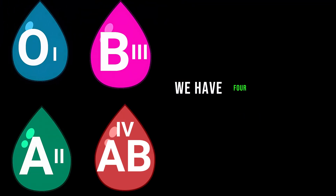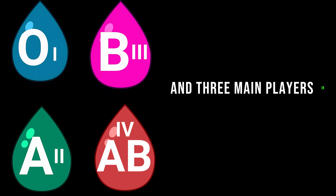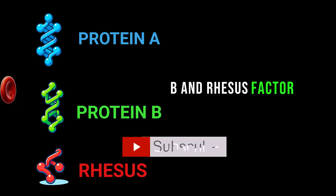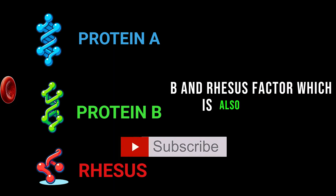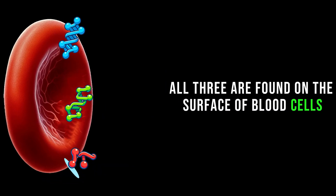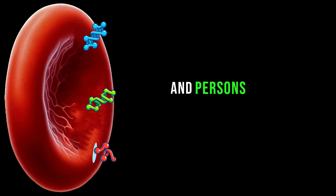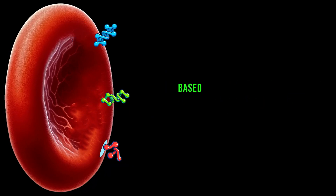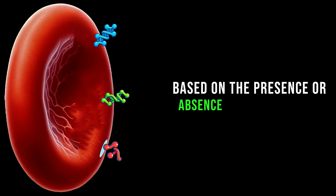We have 4 main blood types and 3 main players in defining blood types: protein A, protein B, and the Rhesus factor, which is also a protein. All three are found on the surface of blood cells, and a person's blood type is determined based on the presence or absence of these proteins.